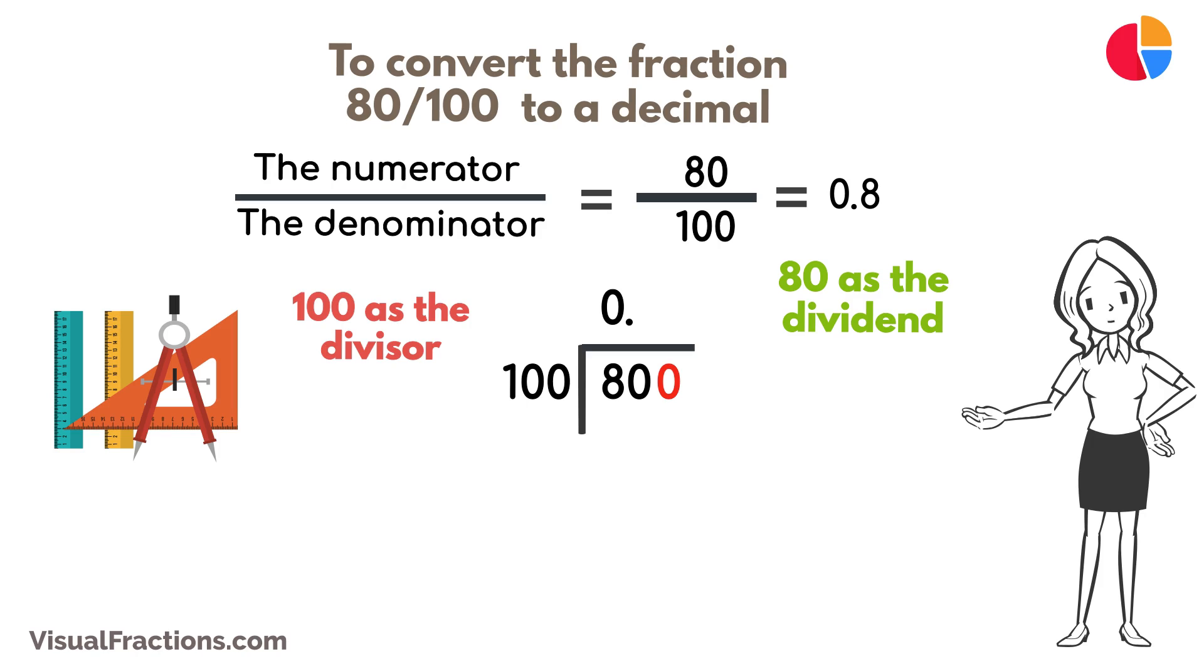How many times does 100 go into 800? Exactly 8 times. We write 8 after the decimal point in the quotient, making it 0.8.